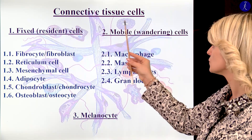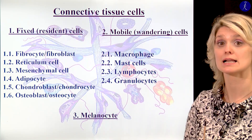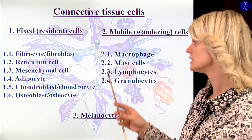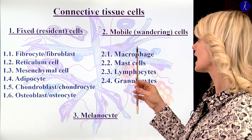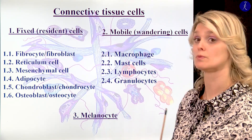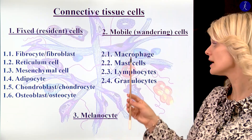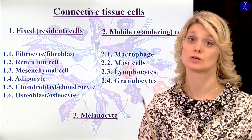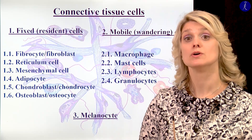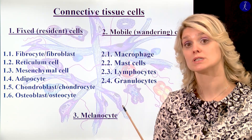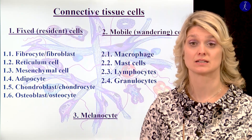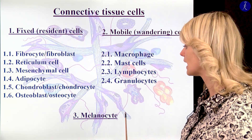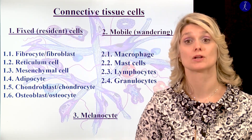In the second group — the mobile cells — I will show you the macrophages, the histiocytes, and the mast cells. I will also show you the different white blood cells: the lymphocytes and granulocytes, which are also one type of mobile cells in the connective tissue. And finally, in a separated group, I would like to show you the melanocytes.